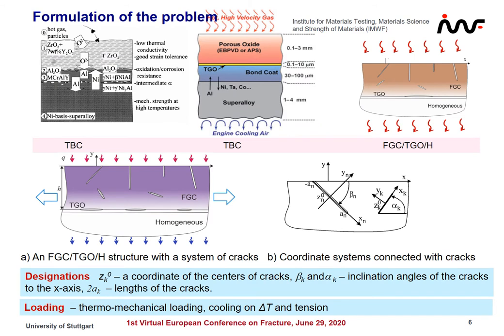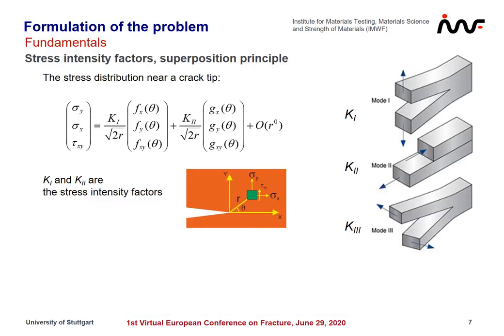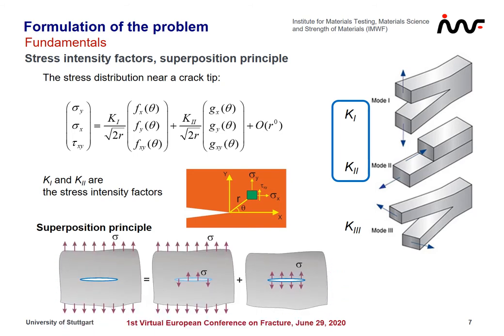Formulation of the problem. Let us consider a thermal barrier coating on a homogeneous substrate with a weak layer between them, with a pre-existing system of cracks. The positions of cracks are defined by midpoint coordinates and inclination angles alpha or beta. This structure is loaded under thermomechanical loading — cooling by delta T and then tension. Stress intensity factors K1 and K2 will be obtained, and the superposition principle will be used, meaning that the far applied load is reduced to a load on the crack faces.